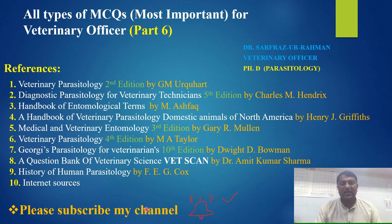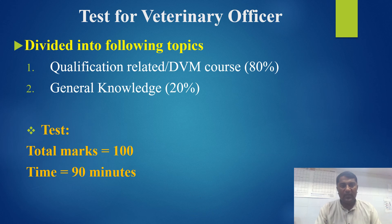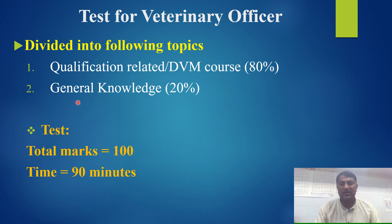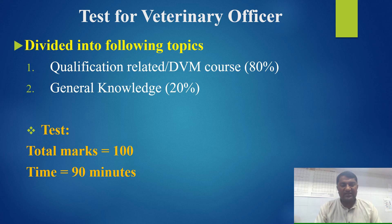Please subscribe my channel and also push the bell icon button. This test for the post of veterinary officer consists of two main parts. One is the qualification-related or DVM course, which consists of 80%, while the other part is general knowledge, which consists of 20% of the whole test. The total test is 100 marks and the time is 90 minutes.